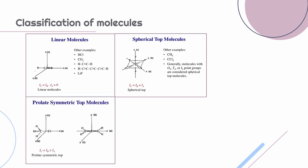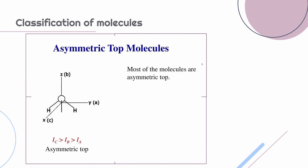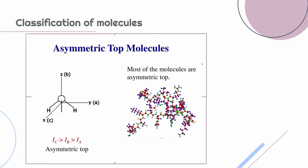Prolate symmetric top molecules has two moments of inertia equal and that is greater than the third moment of inertia. An example is chloromethane. Oblate symmetric top molecules have two of its moments of inertia equal but lesser than the third moment of inertia. An example is BF3. Most of the molecules we see are asymmetric top molecules where none of its moments of inertia are equal. Examples are anthracene, NO2 and proteins.